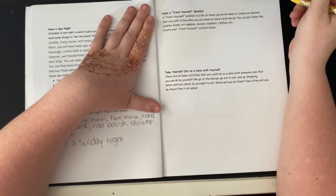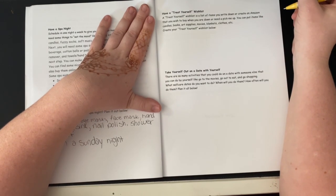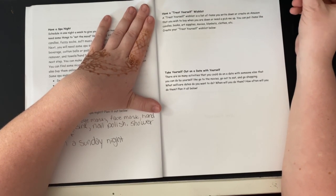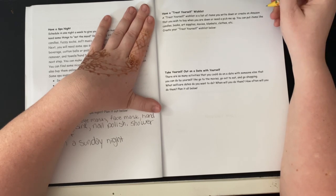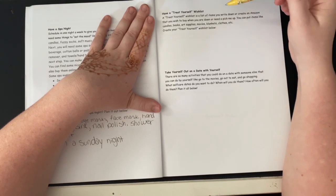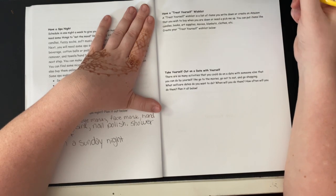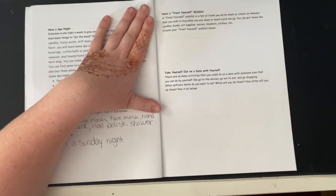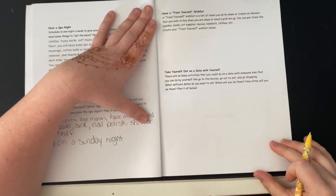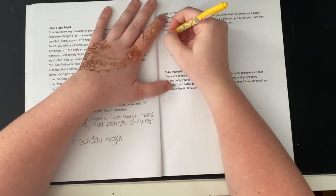Have a treat yourself wishlist. A treat yourself wishlist is a list of items you write down or create an Amazon list that you wish to buy when you are down or need a pick me up. You can put items like candles, books, art supplies, movies, blankets, clothes, et cetera. Create your treat yourself wishlist below.